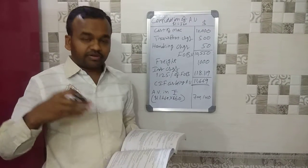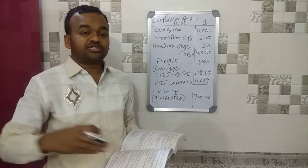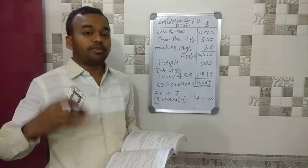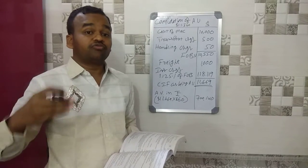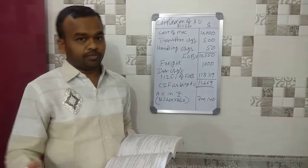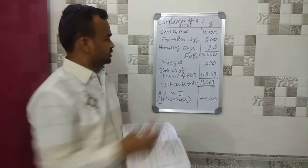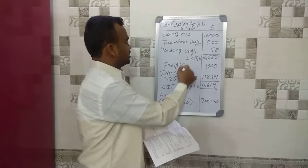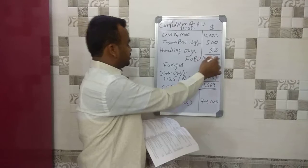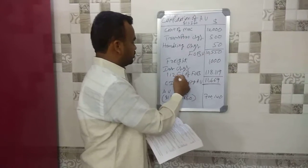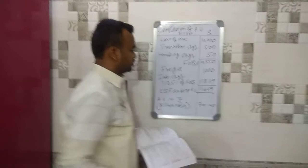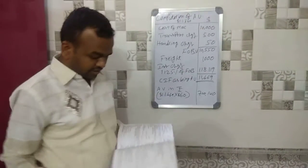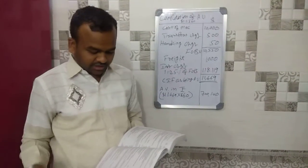If the insurance charges are not paid, we have to take 1.125% of the FOB value. So we calculate insurance charges as 1.125% of the FOB value of $10,550.